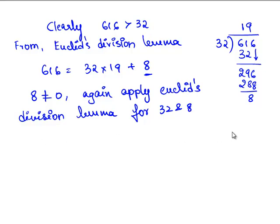So let us divide 32 by 8. 8 goes in 32 exactly 4 times. Therefore 8 times 4 is 32 and the remainder is 0. Therefore, 32 can be written as 8 times 4 plus 0. Since the remainder obtained is 0,